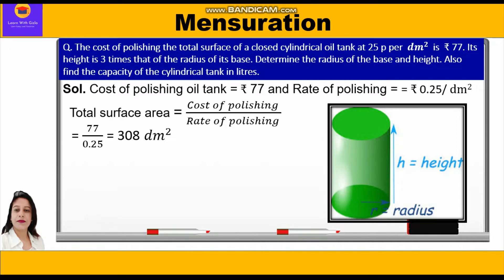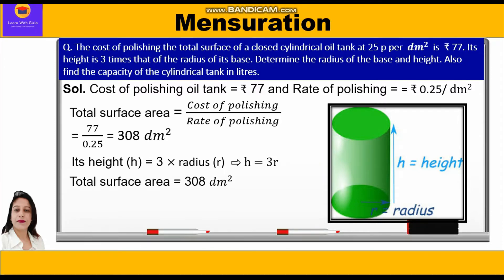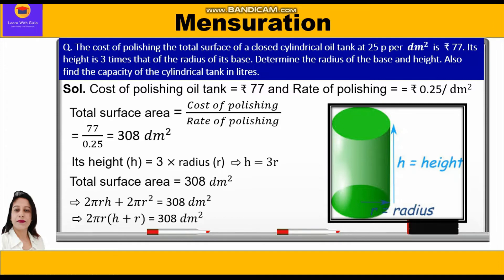Since height is equal to 3 times the radius, we write h = 3r. The total surface area is 308 dm², and the formula is 2πrh + 2πr² = 308. We take 2πr common and write 2πr(h + r) = 308.